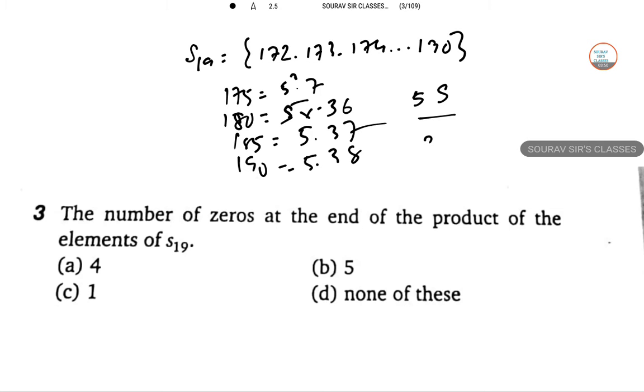So note that the number of 2s are more than the number of 5s. The number of 2s is more than the number of 5s. So that the total number of zeros at the end of the product of the element is 5. So answer is 5.